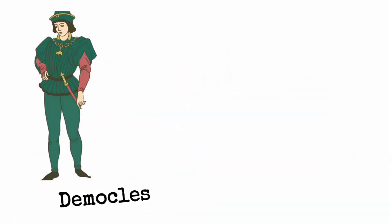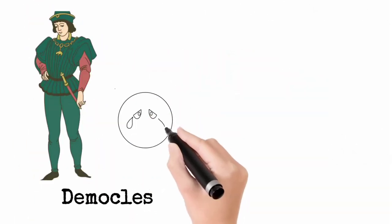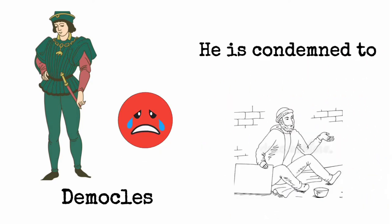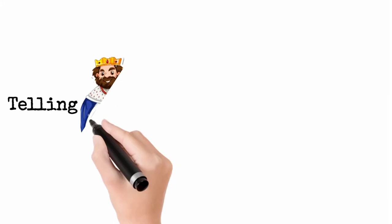He had a courtier named Democles who was always complaining about his bad luck, how he is condemned to live a life of poverty, while fervently telling Dionysus how lucky he was.